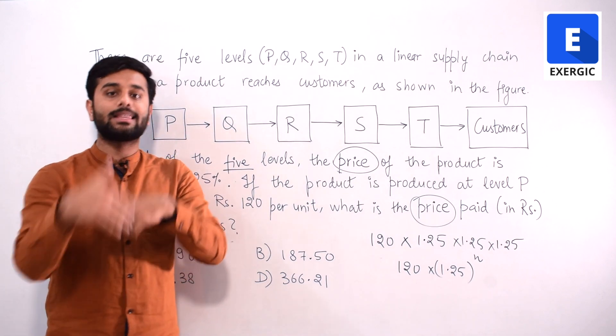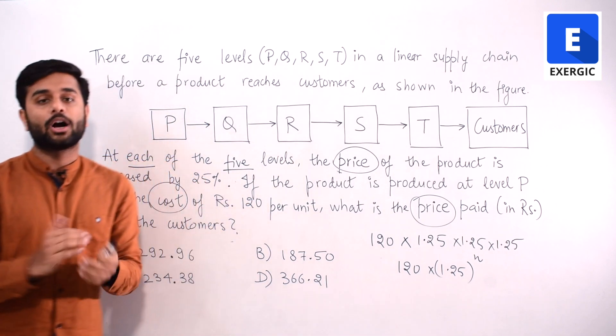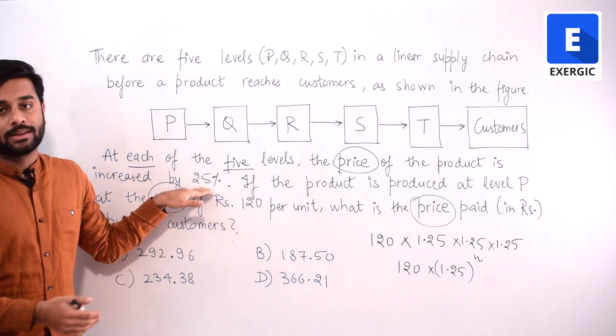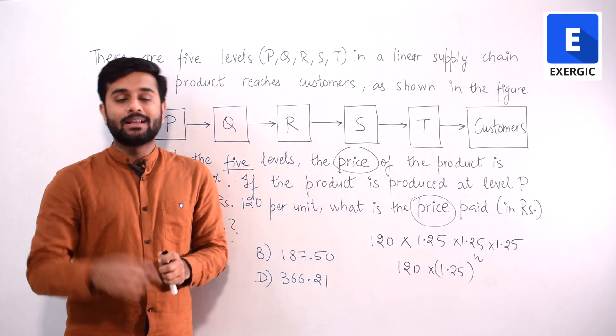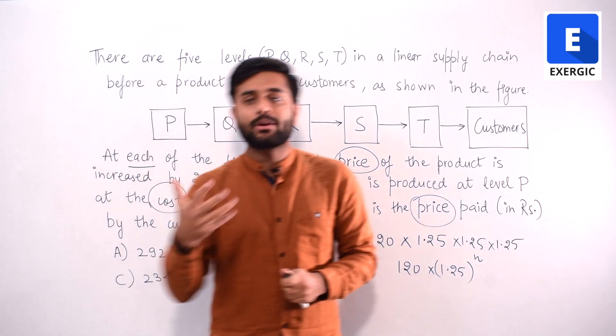It will take its margin and then it will sell to Q. And by how much margin is it going to increase? That is same for all, that is given to us. So at P also price will increase. That is why you can say it is a general aptitude question also.